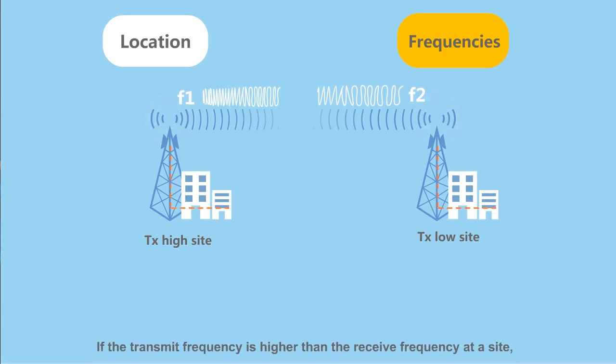If the transmit frequency is higher than the receive frequency at a site, the site is known as a transmit high site.